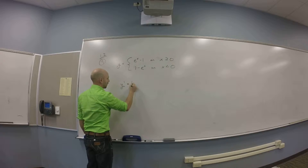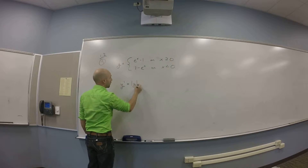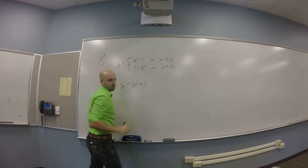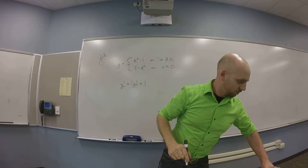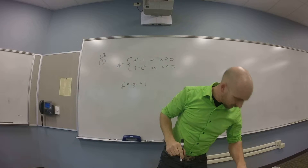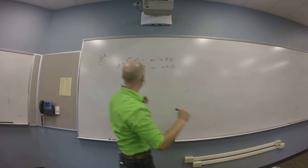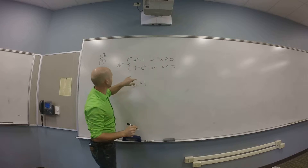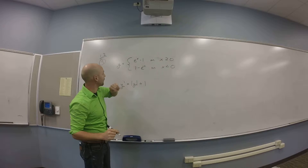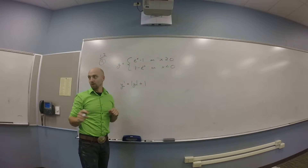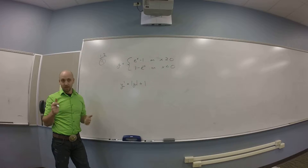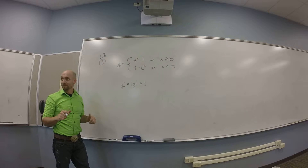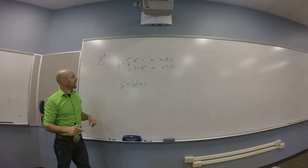Actually the second piece reads 1 minus e to the minus x — not e to the x. That correction would really screw things up in a second, so good catch.